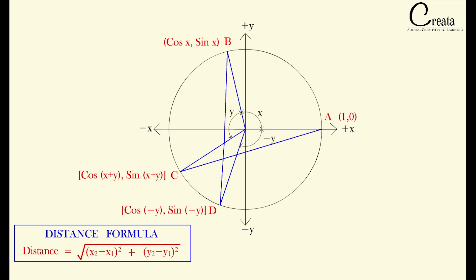Same we will apply in our case also. We know both the end coordinates. We can calculate the distance B, D as BD square is equal to cos x minus cos minus y whole square, plus sin x minus sin minus y whole square. I think everything is clear till now. Any doubts you can write in the comment box.